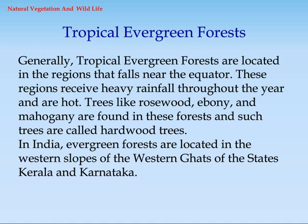Tropical Evergreen Forests are generally located in regions near the equator. These regions receive heavy rainfall throughout the year and are hot. Trees like rosewood, ebony, and mahogany are found in these forests; such trees are called hardwood trees. In India, evergreen forests are located on the western slopes of the Western Ghats in the states of Kerala and Karnataka.